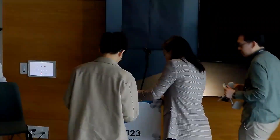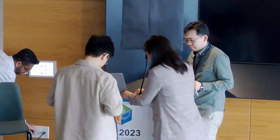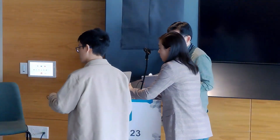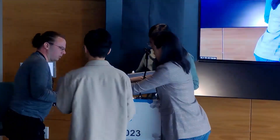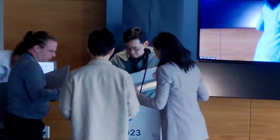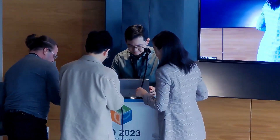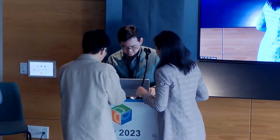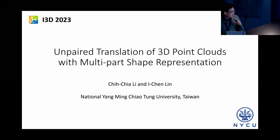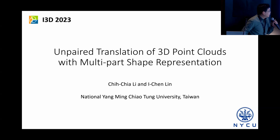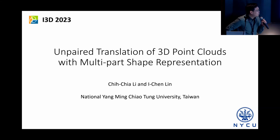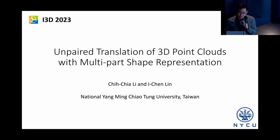The second talk of the session is entitled Unpaired Translation of 3D Point Clouds with Multi-part Shape Representations by Chi Chi Li. The presenter is Chen Lin. Good morning everyone, I'm Chen Lin from National Yangming Jiao Tong University from Taiwan. It's my great honor to present our work about unpaired translation of 3D point clouds using multi-part shape representation.